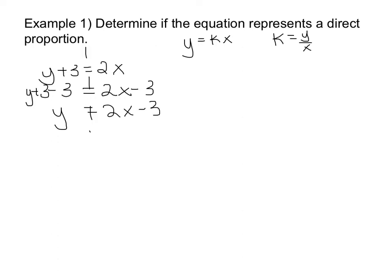I can't simplify that. So I want to see, does this look like either of my two equations? It really doesn't because here I have y equals 2x minus 3 and in both of my equations representing direct proportion, I'm not adding or subtracting anything. So this is not an equation of direct proportion.